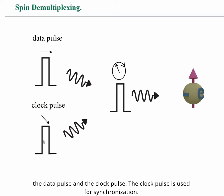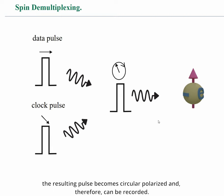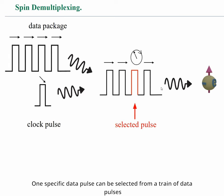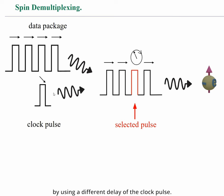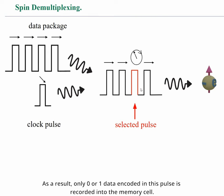The clock pulse is used for synchronization. When two pulses are combined, the resulting pulse becomes circularly polarized, and therefore can be recorded. One specific data pulse can be selected from a train of data pulses by using a different delay of the clock pulse. For example, at a certain delay, only the second pulse is circularly polarized. As a result, only the 0 or 1 data encoded in this pulse is recorded into the memory cell.